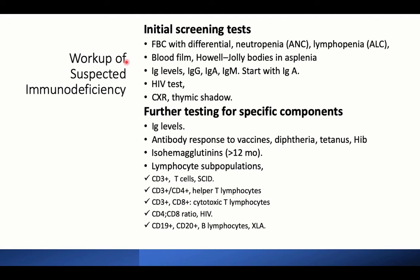Regarding workup for suspected immune deficiency: initial screening starts with a full blood count with differential, very important to obtain the absolute neutrophil count to diagnose neutropenia with levels less than 500 per cubic millimeter, and the absolute lymphocyte count — lymphocyte count less than 2,500 in an infant is not normal. Blood film may show Howell-Jolly bodies associated with asplenia or hyposplenia or post-splenectomy.